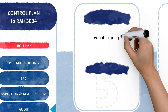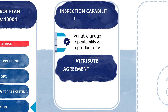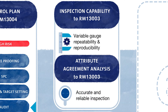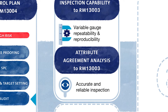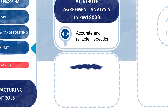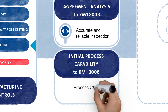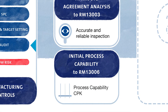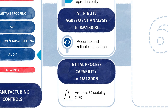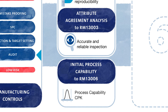We then ensure the capability of the measurement and visual inspection methods required by the control plan. Once verified, we can start to measure the capability of the process to ensure it makes defect-free parts. The Delegated Product Release Verification Programme provides a common standard for inspector competency and qualifications.